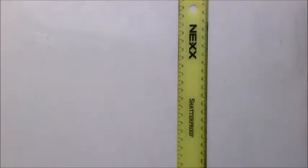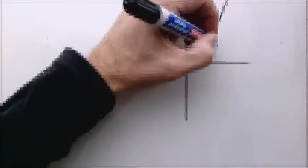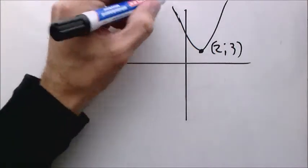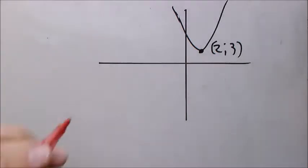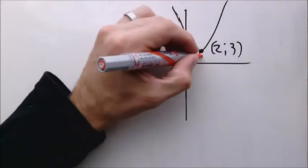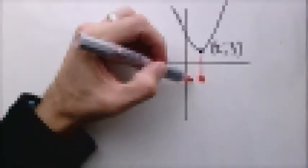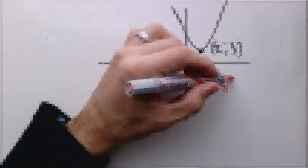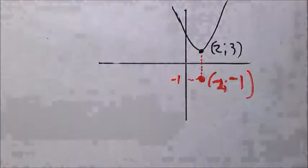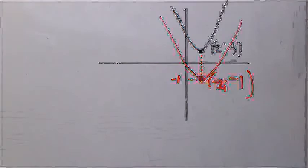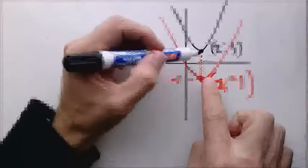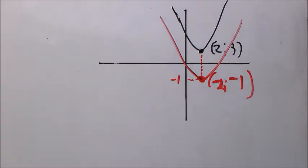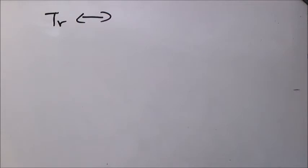For example, if a graph has turning point (2, 3) and it is translated 4 units down, the turning point moves from 3 to -1, giving a new turning point of (2, -1). The new graph sits at that new position. The turning point is your point of reference with the parabola — you move that and everything moves around it. That covers vertical translation.